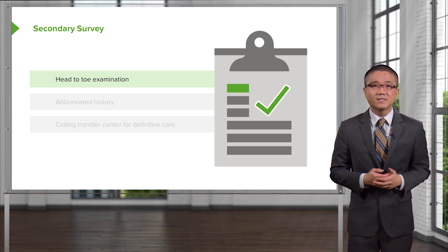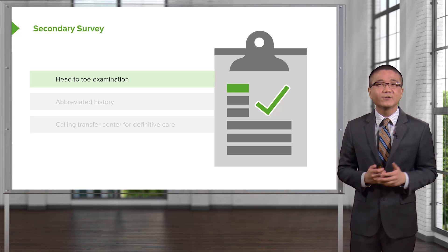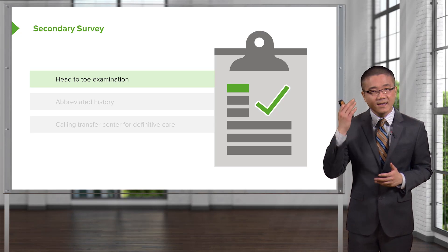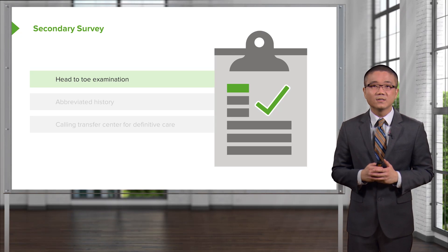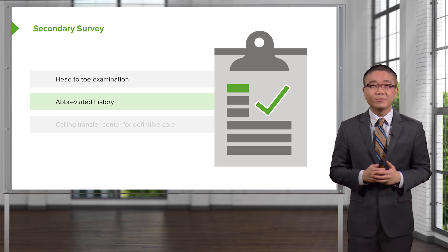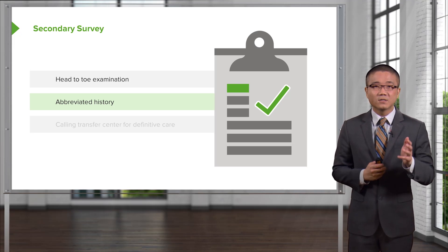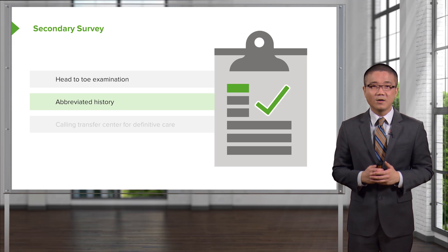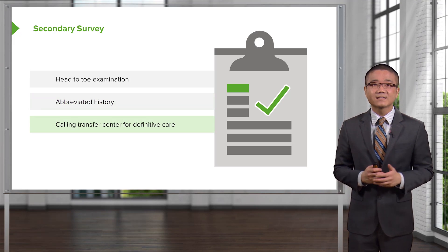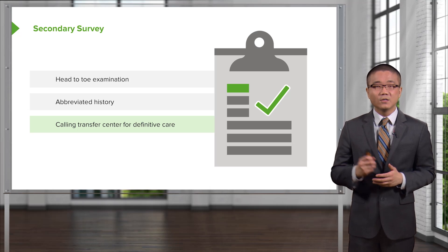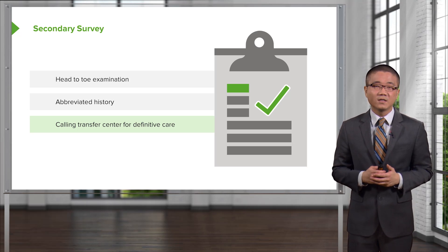Now we can move on to a secondary survey, which is essentially a head-to-toe examination of the patient. We also obtain an abbreviated history called an AMPLE history — the most pertinent information needed to help manage the traumatic patient. And lastly, we call for transfer to a higher level of care for definitive trauma resuscitation.